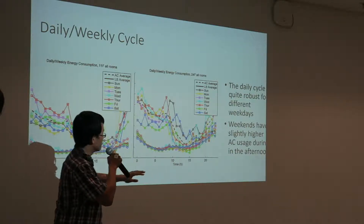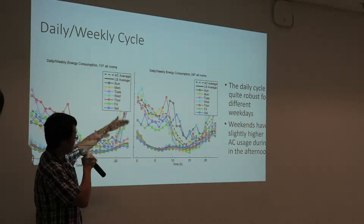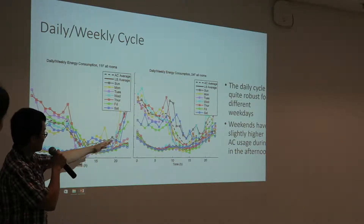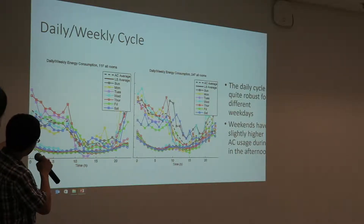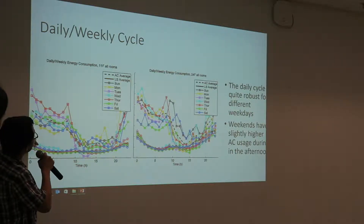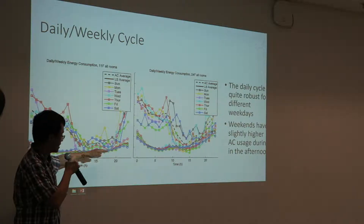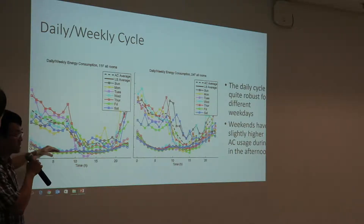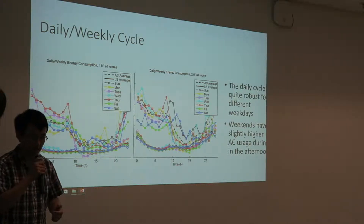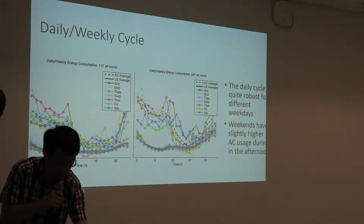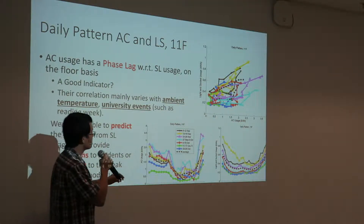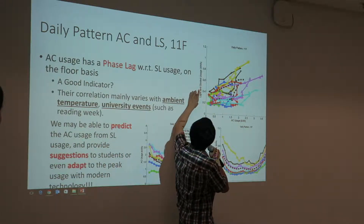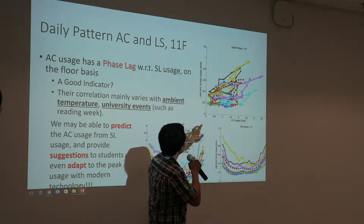There are certain differences between weekdays and weekends. On weekends, we have slightly higher AC usage during the afternoon. But for light and socket usage, it is quite robust. In economic terms, we can describe this as inelastic demand.